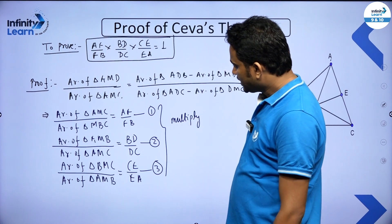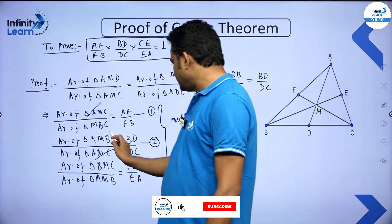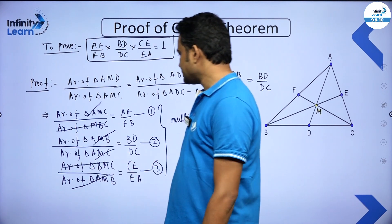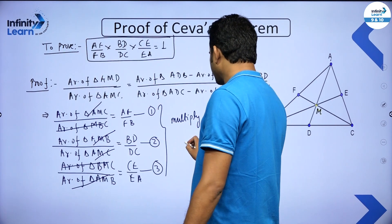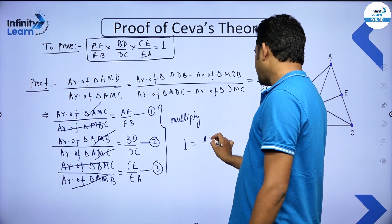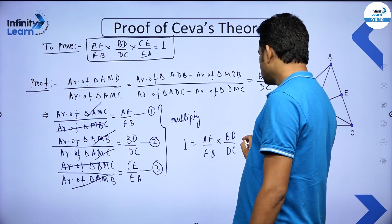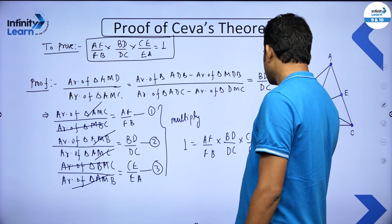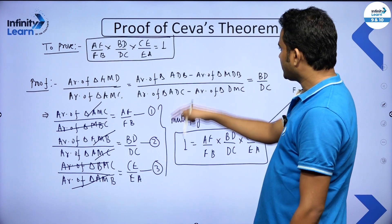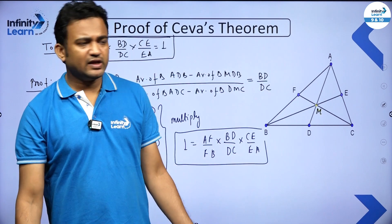Once we multiply the three equations, the area terms cancel: AMC appears in numerator and denominator and cancels, AMB cancels, and BMC cancels. So on the left-hand side we get one, and on the right-hand side we get AF upon FB into BD upon DC into CE upon EA, which equals one. This is exactly what we had to prove. So using the concept of area, we can easily prove Ceva's theorem. There is another method using similarity, but this is the easiest way.